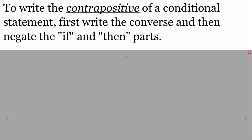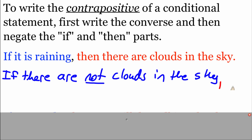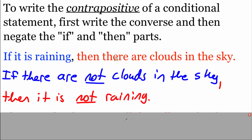The last thing we're going to write out is called the contrapositive. This one's a little more involved because there are two pieces to it: first we write out the converse by flipping the if-and-then pieces around, and then we negate each piece. We've got this same first statement: 'If it is raining, then there are clouds in the sky.' We already did the converse: 'If there are clouds in the sky, then it is raining.' Now we take that converse and negate it: 'If there are not clouds in the sky, then it is not raining.' There's our contrapositive — we flipped the if-and-then portions and negated it.